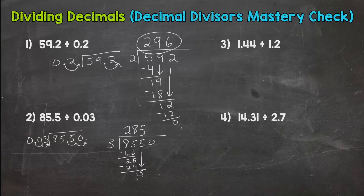5 times 3 is 15. Subtract I get 0. Bring down that 0. Hopefully you didn't leave it as 285.